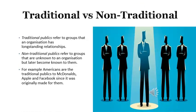Let's begin with the difference between traditional and non-traditional publics. Traditional publics refer to groups that an organization has long-standing relationships with. Non-traditional publics, on the other hand, refer to groups that are unknown to an organization but later become known to them. For example, Americans are the traditional publics to brands like McDonald's, Apple, and Facebook, because these brands were originally made for them.